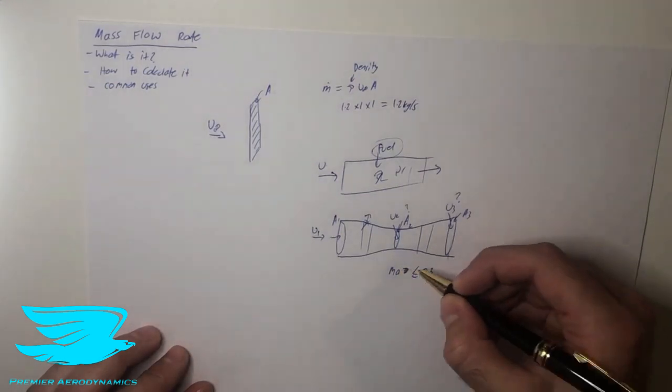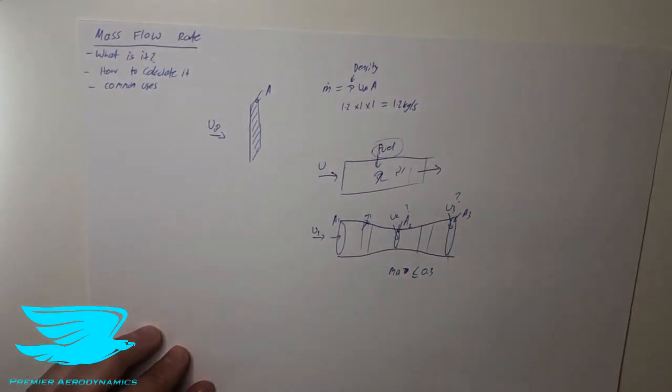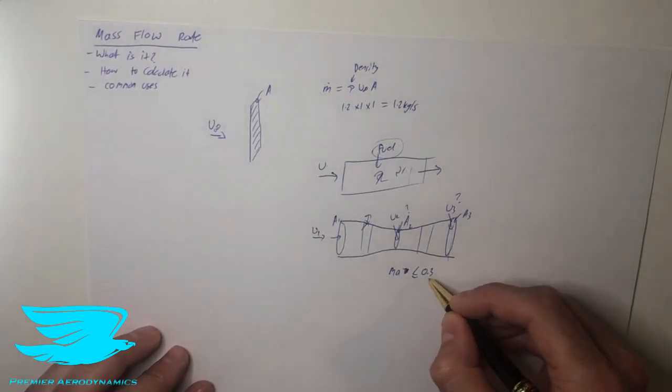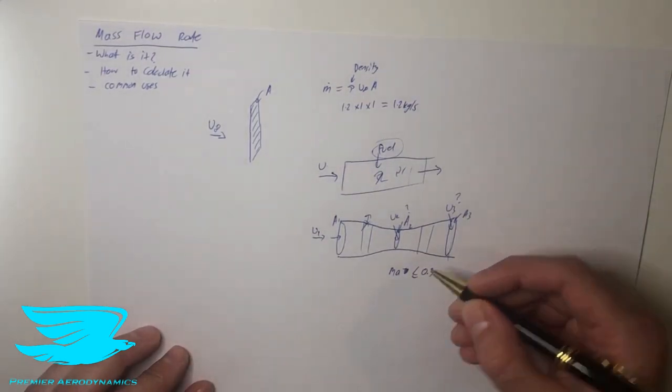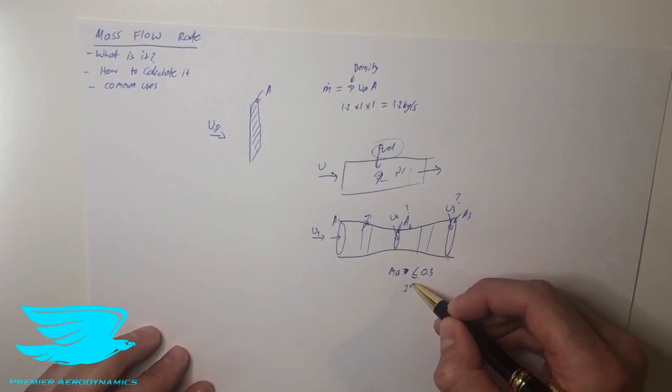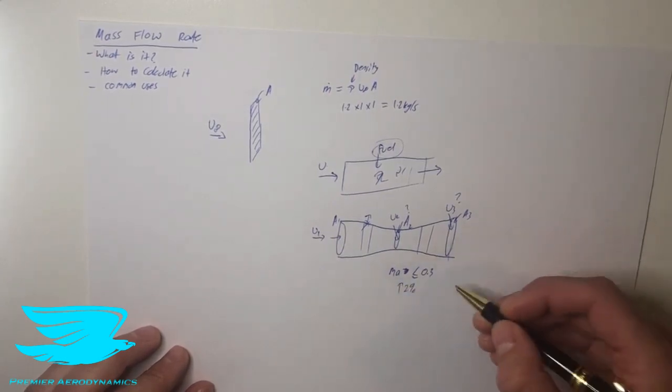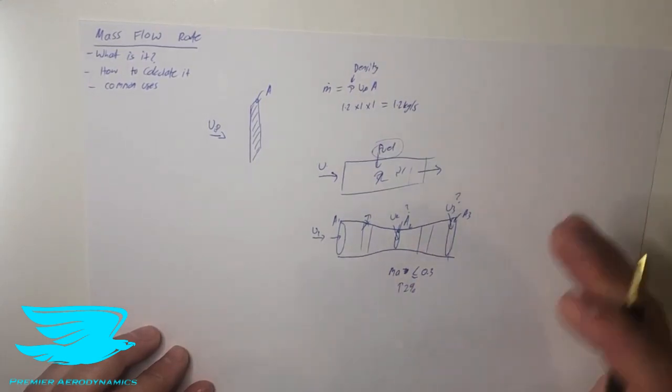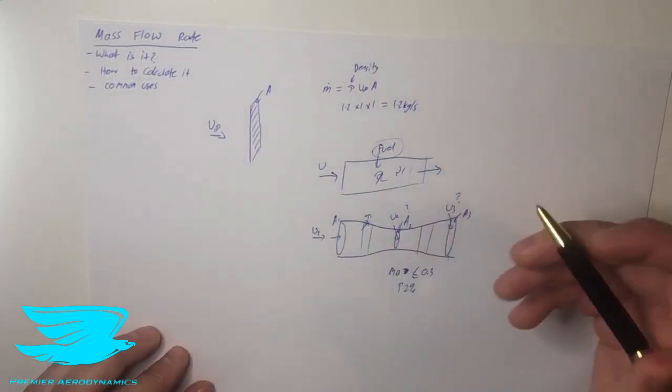The reason why we choose this number, well first of all it's sort of from history, but if the Mach number increases above 0.3, the error in the density is now going to be 2% or greater. So that means that if we have a Mach number less than 0.3, we can assume that the density of air everywhere is the exact same as what we measure it anywhere.